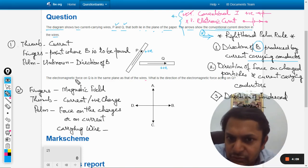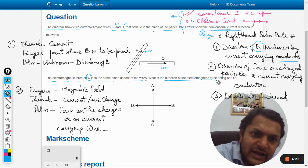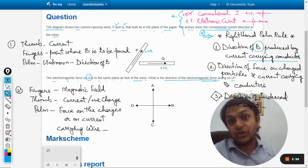Later on, let us move ahead. The electromagnetic force on Q is in the same plane as that of the wires. What is the direction of electromagnetic force that acts on Q?